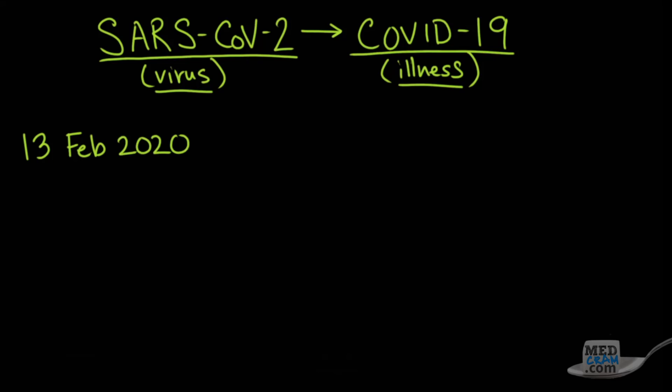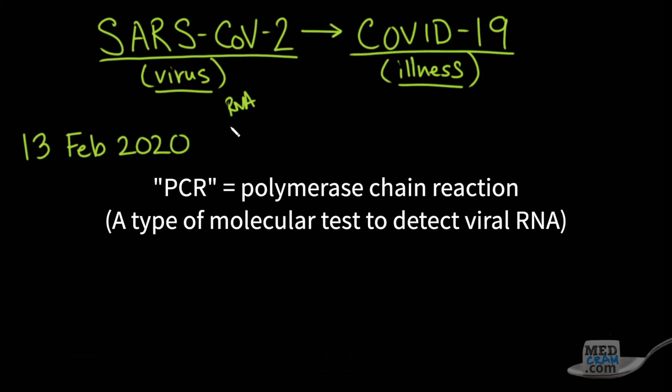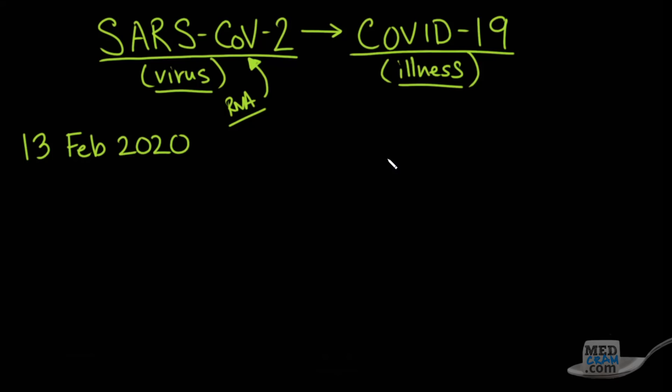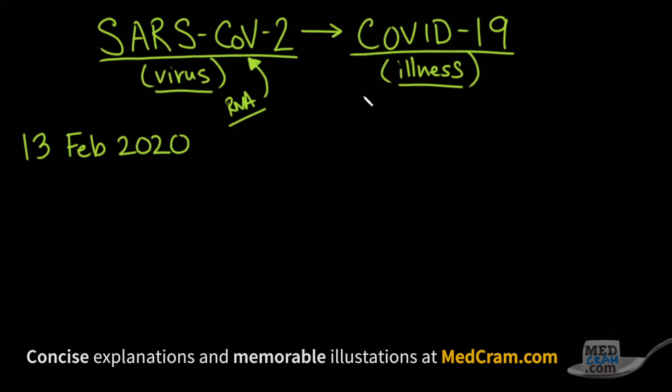Up to this point, the criteria for a confirmed case has been looking at the RNA using PCR technique and test kits specifically for this virus. What they're noticing is that they don't have enough kits to test everybody. As a result of that, there's been a major push in Wuhan, China.